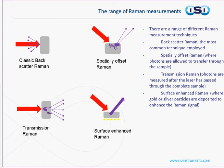Another method is surface-enhanced Raman. This method is very popular within academic institutions. Here, gold or silver particles are deposited and the sample is measured across them. This gives a greatly enhanced Raman signal, allowing individual molecules to be probed. However, it has thus far been limited in industrial applications because of the need to deposit these particles.